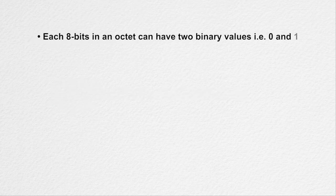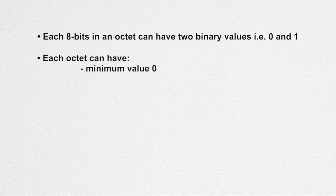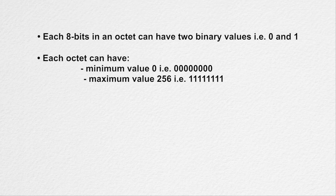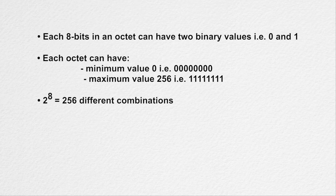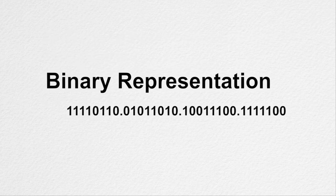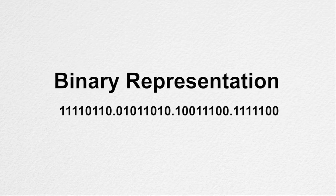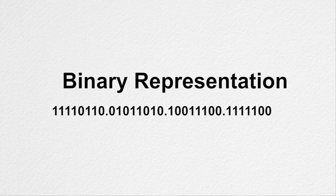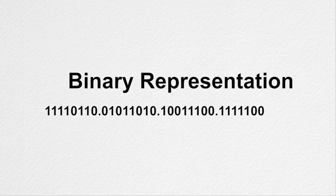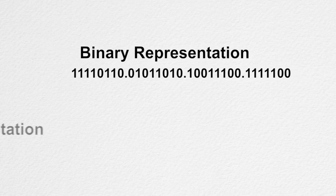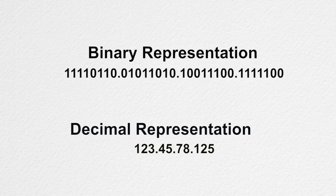An IP address is a 32-bit binary number divided into 4 octets, and each octet consists of 8 binary digits separated by a dot. Each 8 bits in the octet can have 2 binary values, that is 0 and 1. Therefore, each octet can have a minimum value of 0 (eight 0s) to a maximum value of 255 (all 1s), giving 2 raised to power 8, that is 256 different combinations. To remember this 32-bit address in binary is difficult, so for better human understanding it is expressed in decimal format, though the computer understands it in binary. In decimal, an IP address is expressed as, for example, 123.45.78.125.